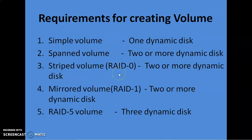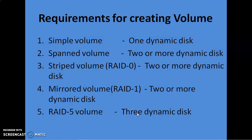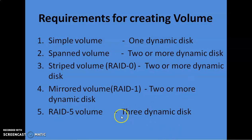Striped volume, also known as Redundant Array of Independent Disks, requires two or more dynamic disks. Mirror volume also requires two or more dynamic disks. RAID 5 needs a minimum of three hard drives. Windows XP supports simple volume, spanned volume, and striped volume only. If you want to create mirrored volume and RAID 5, you need a server operating system.